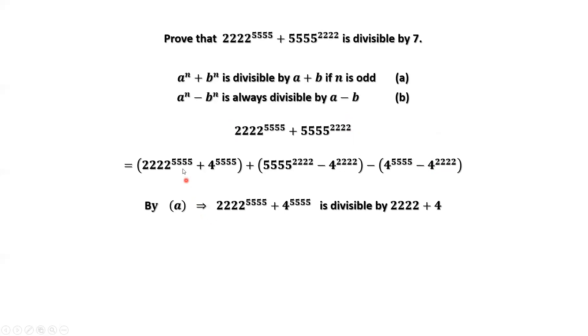Let's prove each group is divisible by 7. By the first result, we have this result. The first group is divisible by a plus b. a equals 2222, b is 4. 2222 plus 4 equals 2226, which is 7 times 318. Therefore, this first group is divisible by 7.